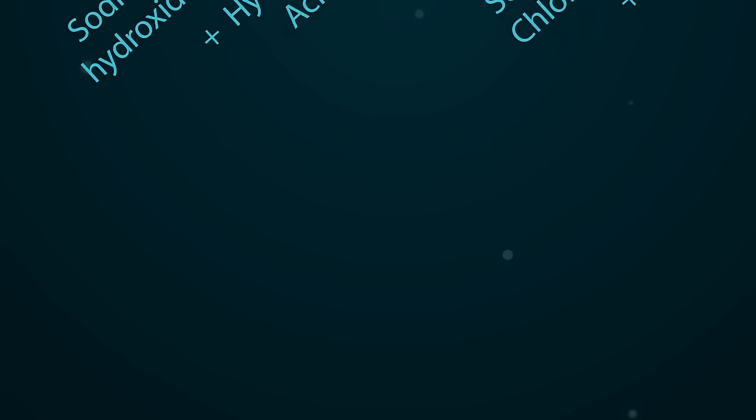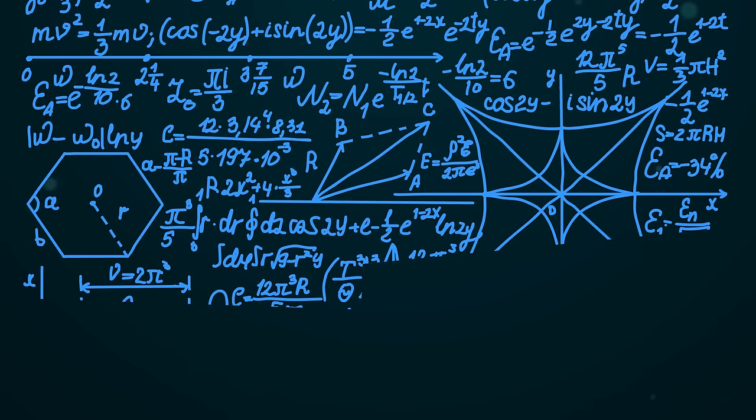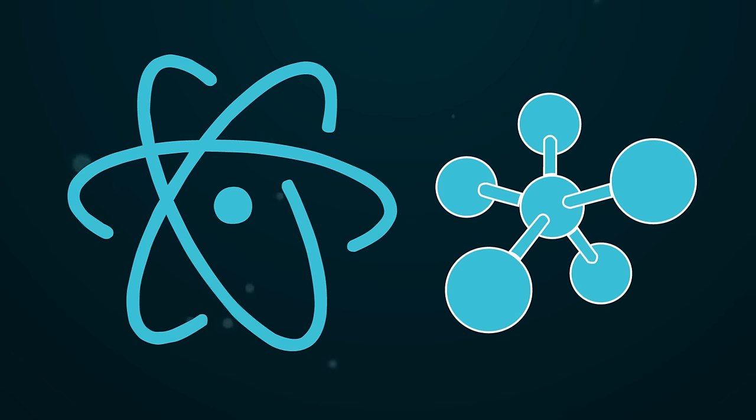A word equation provides a good summary, but a symbol equation provides more information. It shows more detail and allows us to see how many atoms and molecules are involved in each reaction.